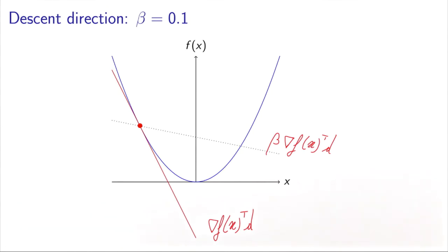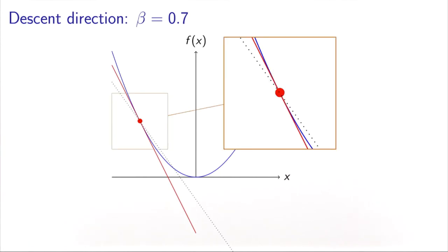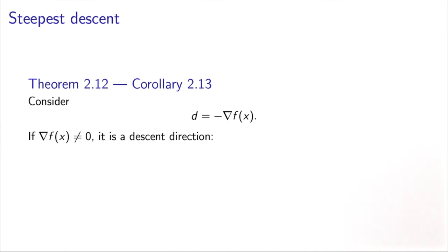The value of beta plays a role in what we can predict in terms of decrease. If we change beta to a bigger value — for example, beta equals 0.7 — the slope of the line that defines the decrease changes. But again, if we zoom, we see that it is valid: as soon as we leave x, the value of the function is below that line. This would be true for any value of beta which is strictly less than 1. Among all the descent directions, one is particularly interesting.